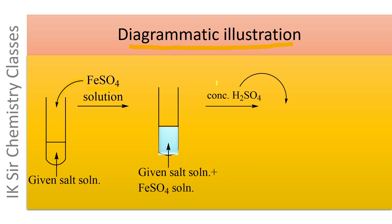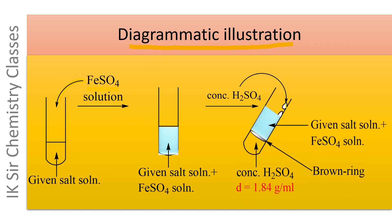Then concentrated sulfuric acid is added to the test tube while it is kept in an inclined position, so that the concentrated sulfuric acid is added along the wall. Concentrated sulfuric acid has a very high density of 1.84 g/mL, which is much higher than the density of the solution at about 1 g/mL; therefore it goes to the bottom of the test tube. If a brown ring is formed at the junction, the presence of nitrate ion is confirmed.